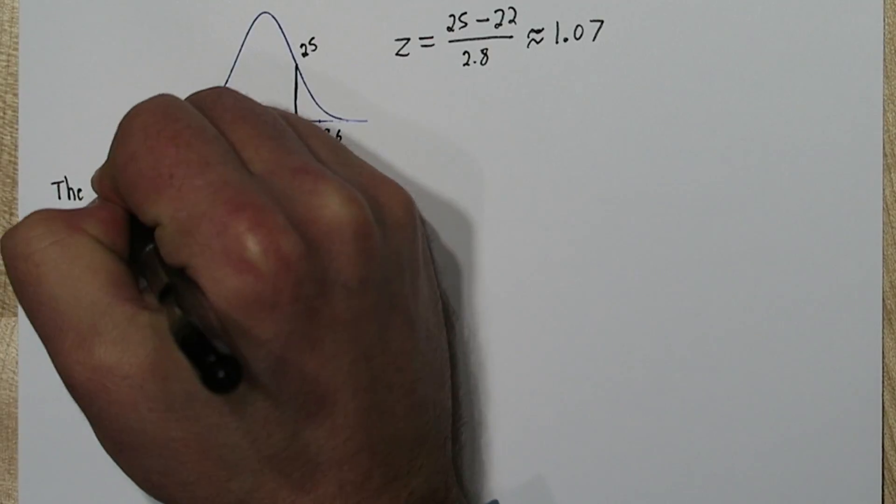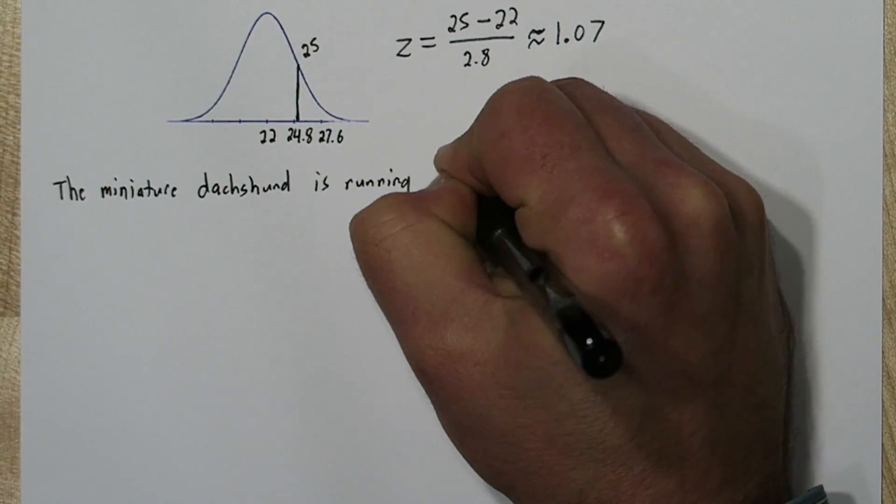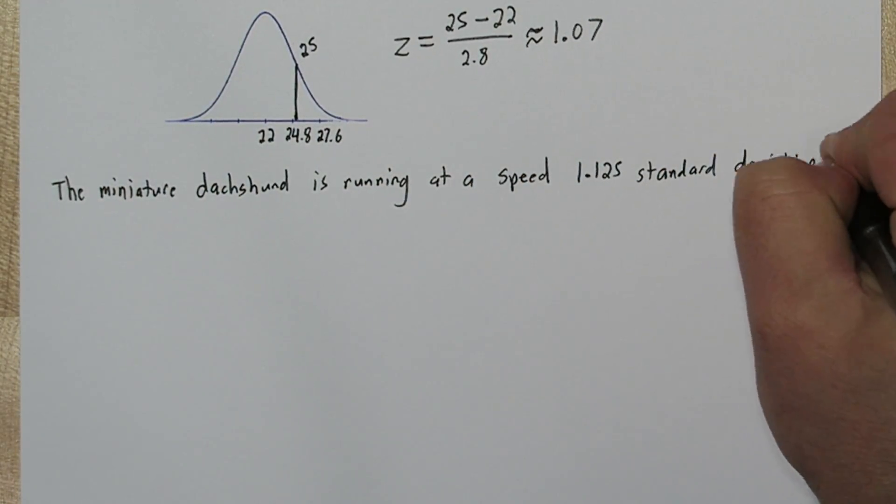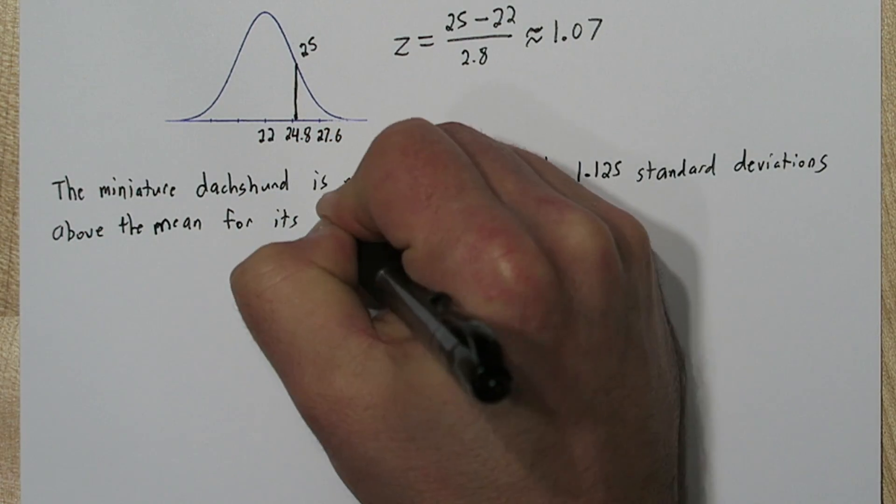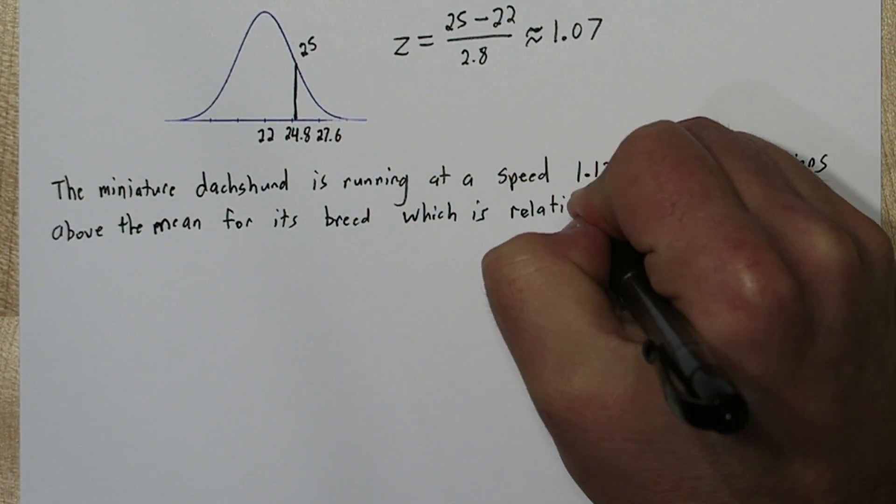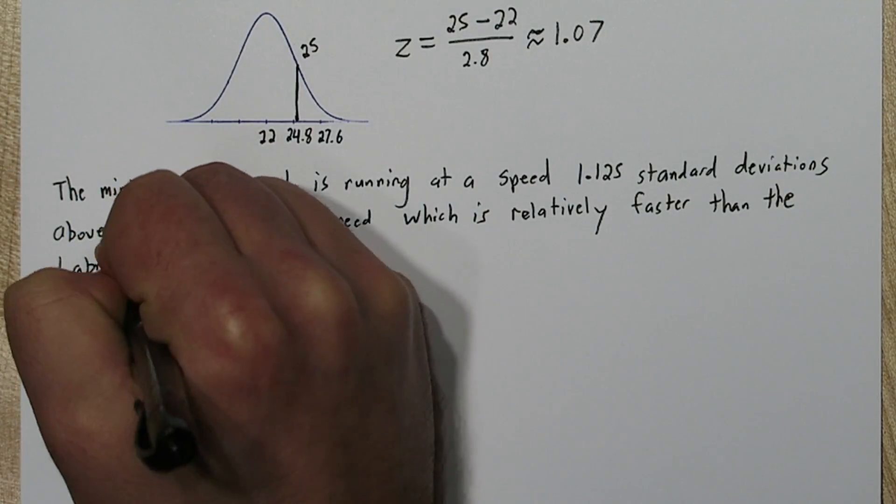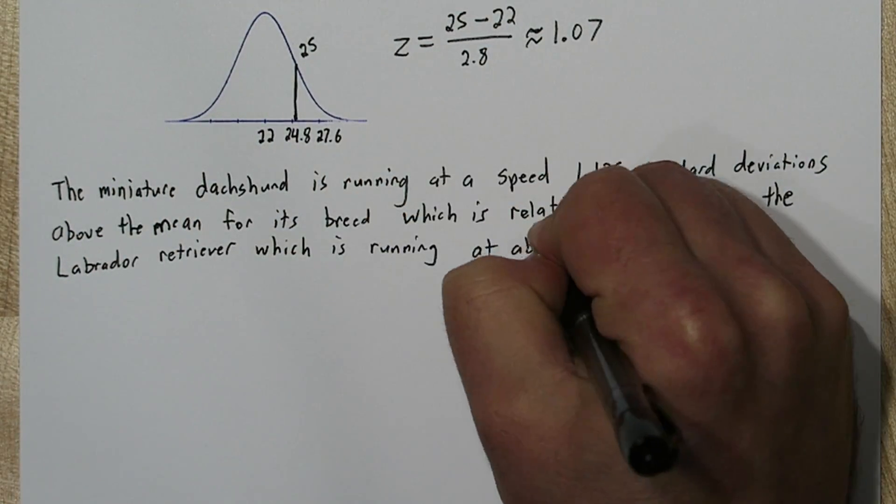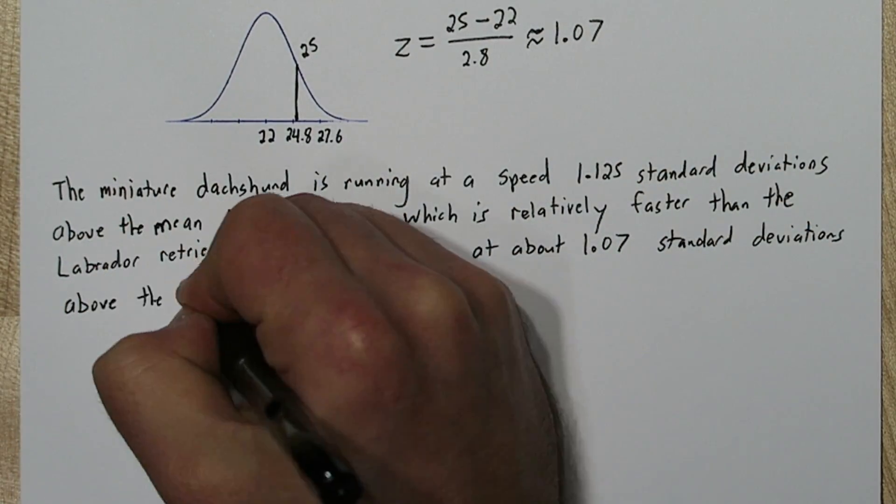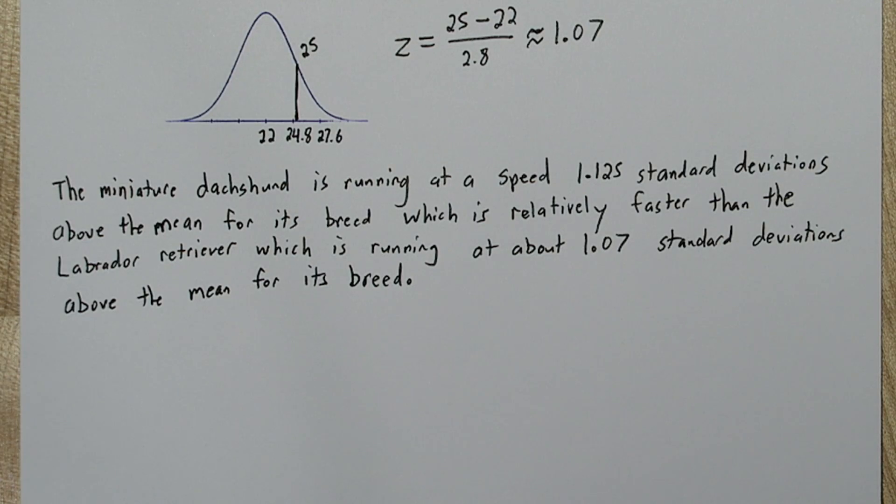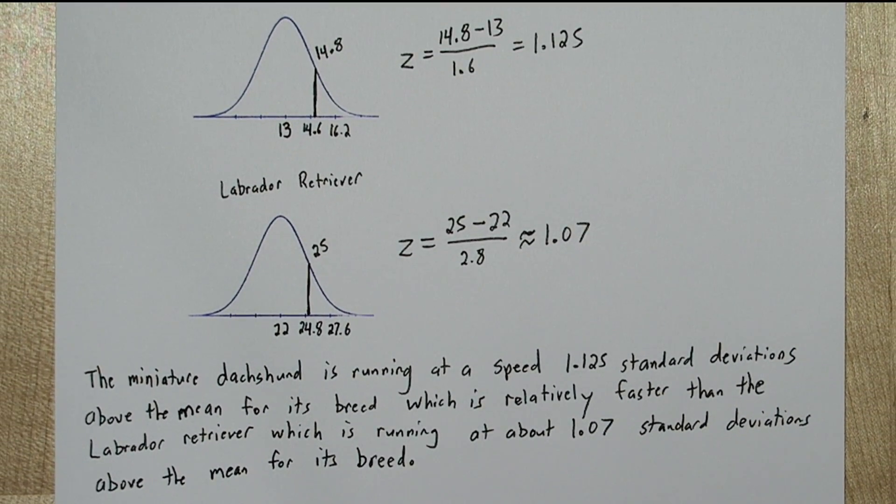So what do these two z-scores mean? The miniature Dachshund is running at a speed 1.125 standard deviations above the mean for its breed, which is relatively faster than the Labrador Retriever, which is running at about 1.07 standard deviations above the mean for its breed. So the wiener dog wins!